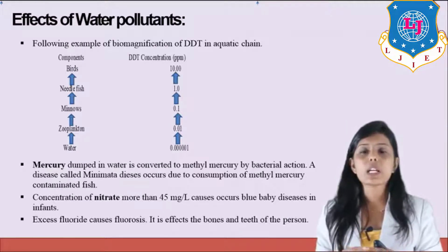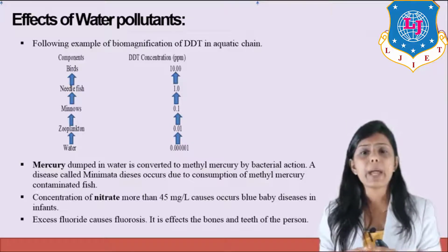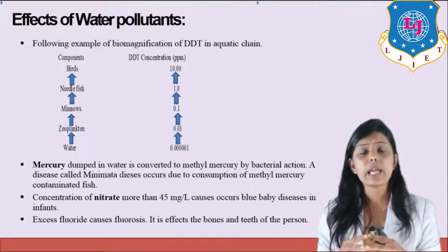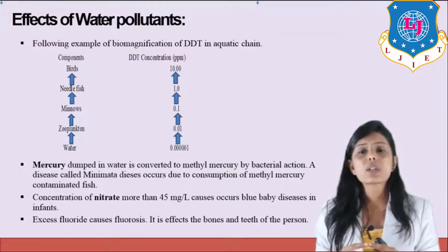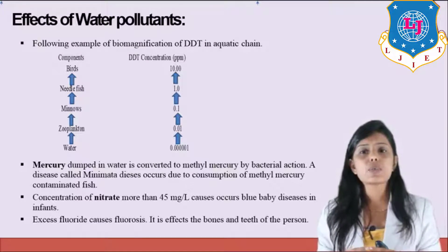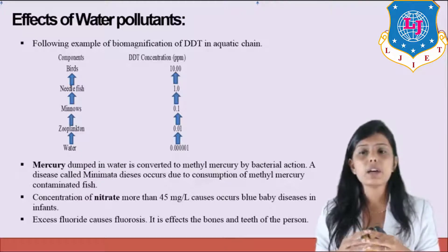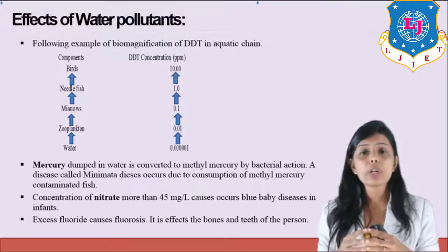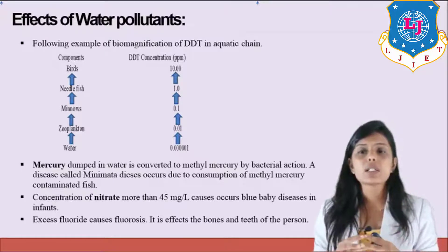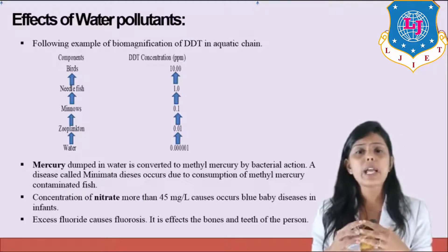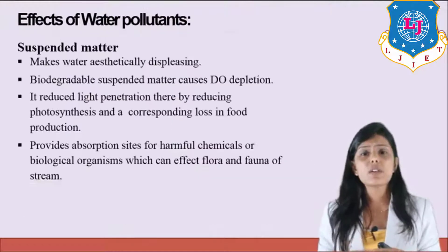Mercury dumped in water is converted to methyl mercury by bacterial action. A disease called Minamata disease occurs due to consumption of methyl mercury contaminated fish. If the concentration of nitrate becomes more than 45 milligram per liter, blue baby disease is caused in infants. Excessive fluoride causes fluorosis, affecting the bones and teeth of a person.